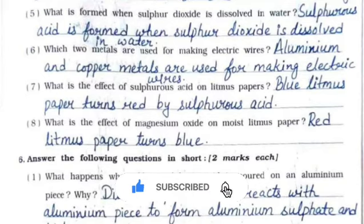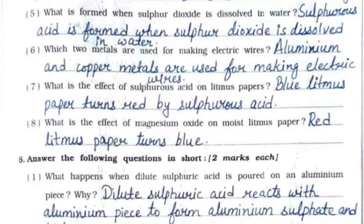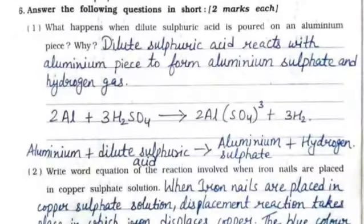Eighth: what is the effect of magnesium oxide on moist litmus paper? The red litmus paper turns blue.